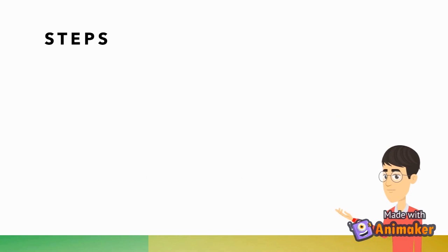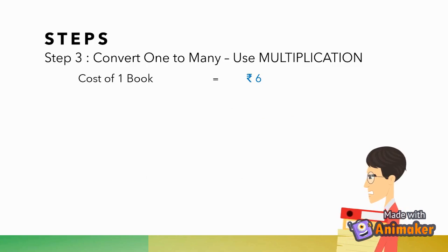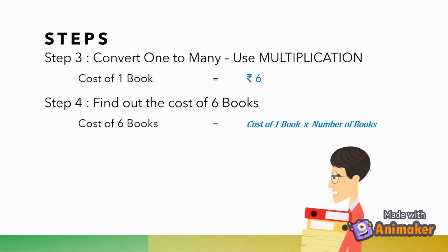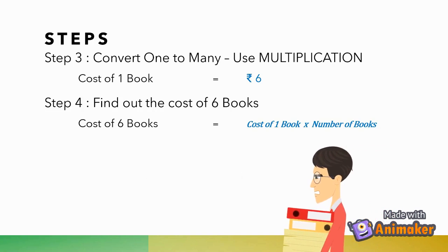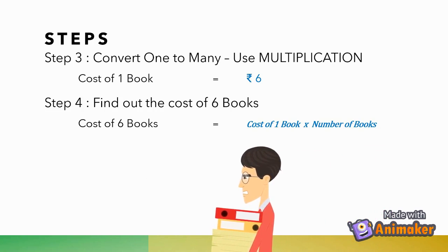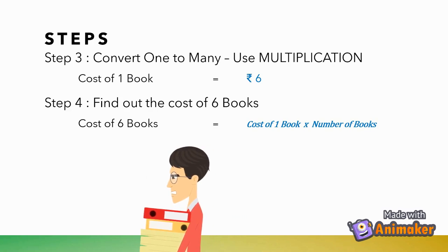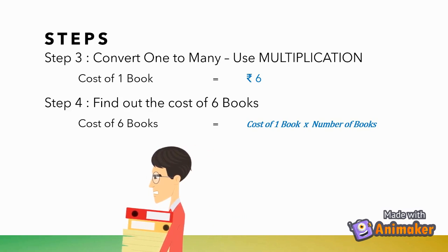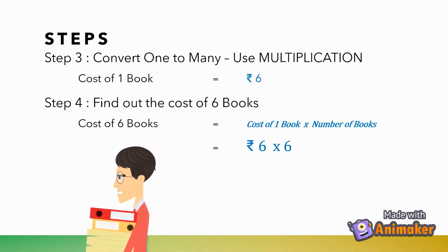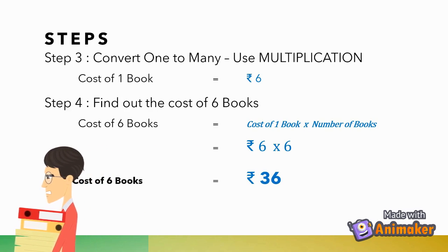Now, we will convert one to many, and we will use multiplication for the same. We already found out the cost of one book. Now, we have to find out the cost of 6 books. The cost of 6 books is equal to cost of one book multiplied by the number of books. So, 6 rupees multiplied by 6 books gives us 36 rupees.